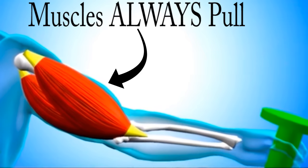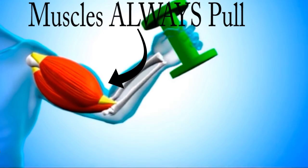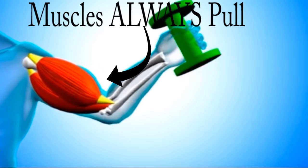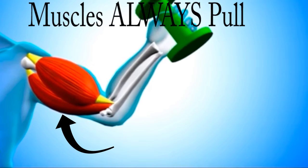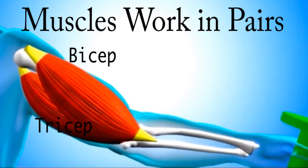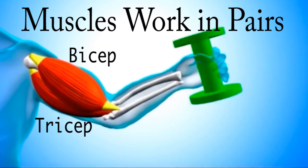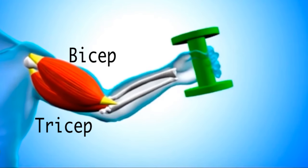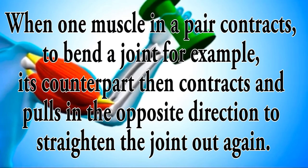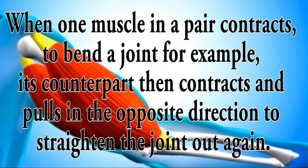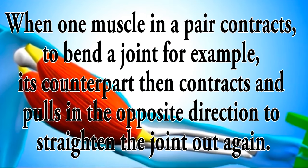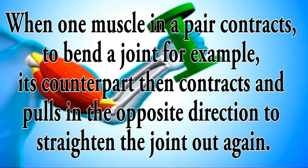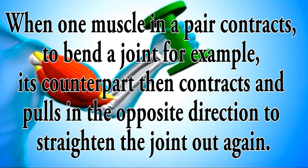There are many muscle rules, but the most important ones to remember is that muscles always pull — they never push. Also, muscles work in pairs. Sometimes they work more than one pair, but they're always working together. When one muscle in a pair contracts to bend a joint, its counterpart then contracts and pulls in the opposite direction to straighten the joint out again.